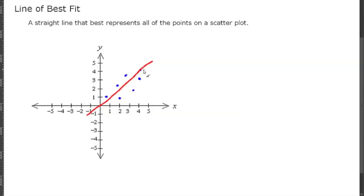It goes through one of the points, and there's an even number of points on the left and on the right. Somebody else could have drawn a line of best fit that looked a little like that. That is also acceptable.